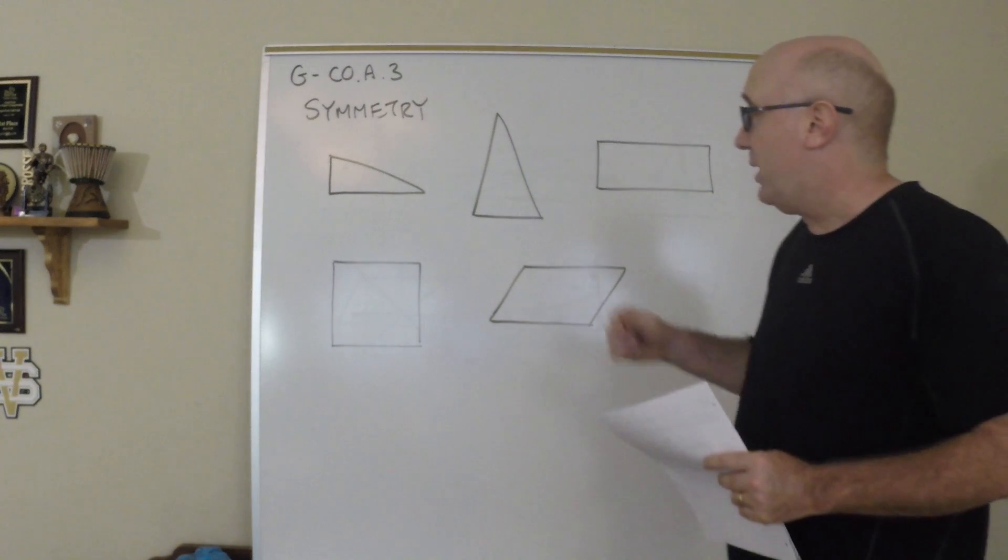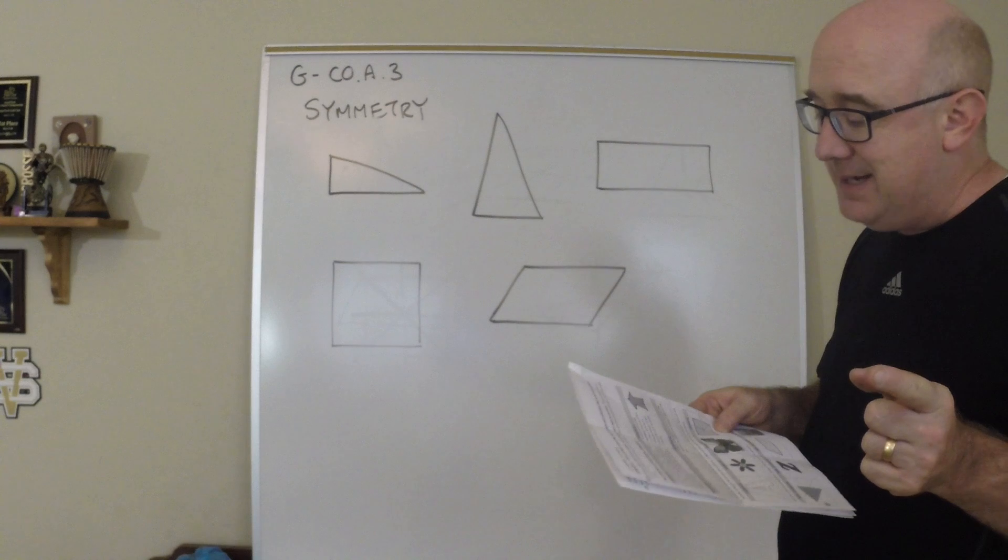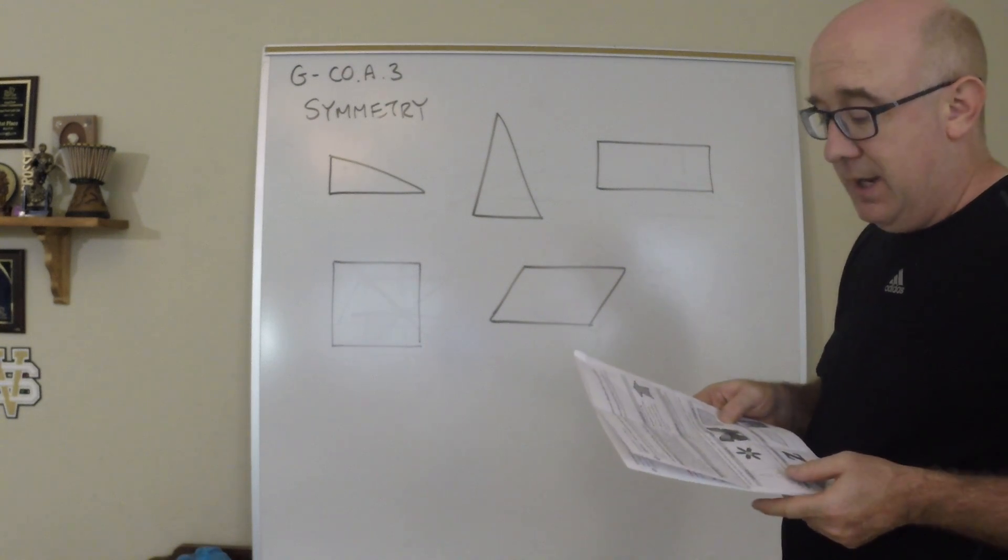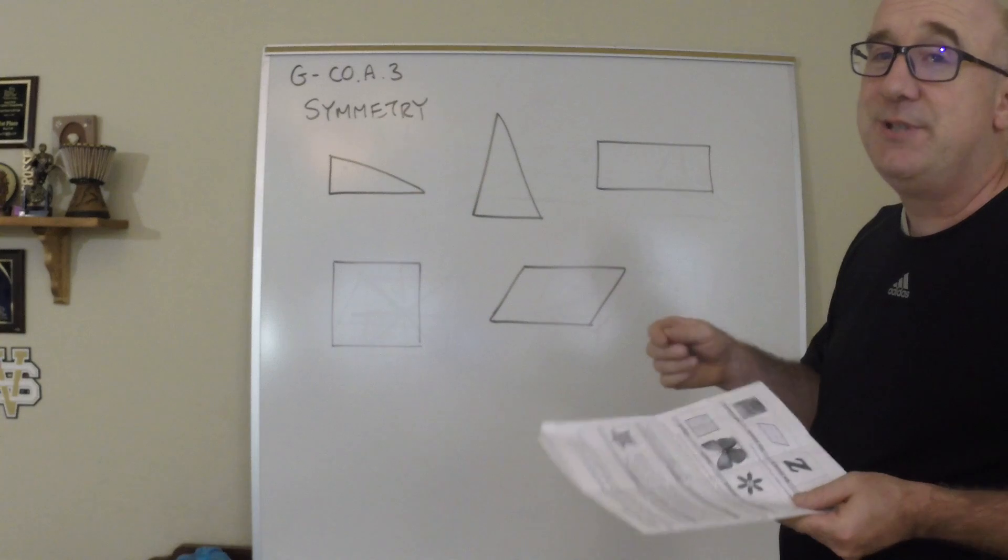So one of the definitions says, a figure in the plane has line symmetry if the figure can be mapped onto itself using a reflection.